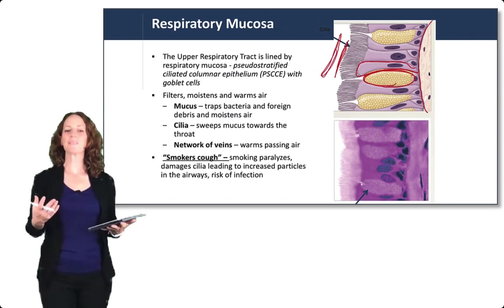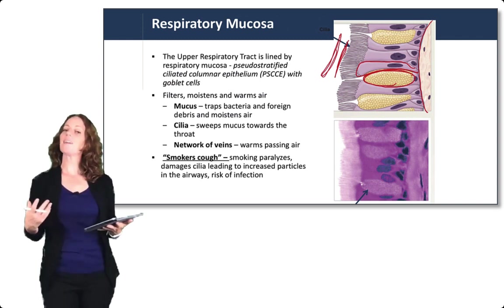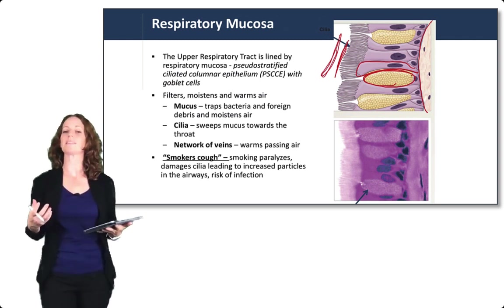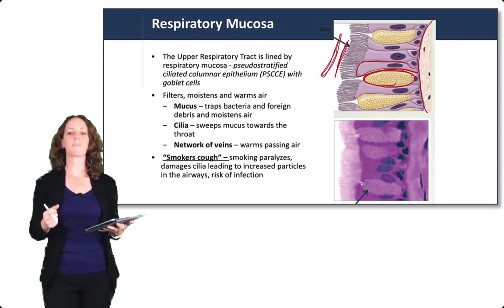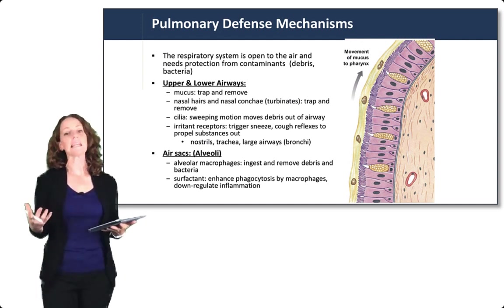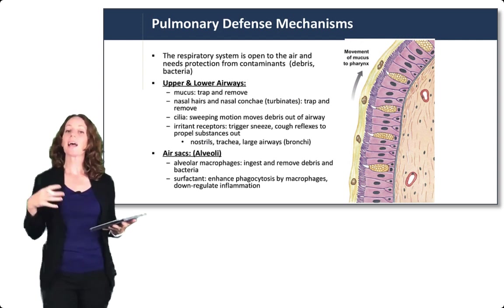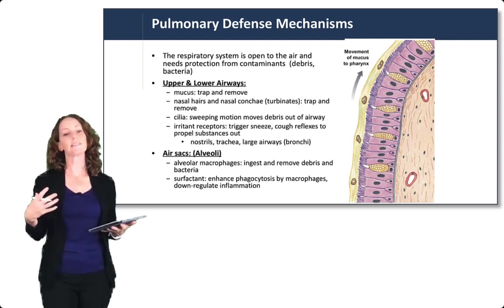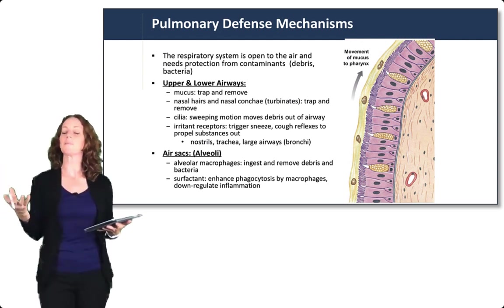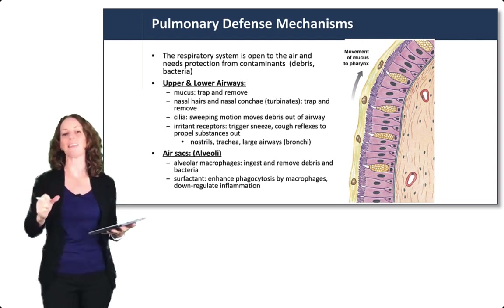A clinical example of the importance of cilia is the smoker's cough. Smoking paralyzes and ultimately damages the cilia, leading to increased particles in the airways and a higher possibility of infection. The respiratory system needs protection from contaminants since it is open to the air. The mucosa with its mucus and cilia helps to trap and remove debris. The nasal cavity also contains small hairs within the vestibule that help trap and remove debris.